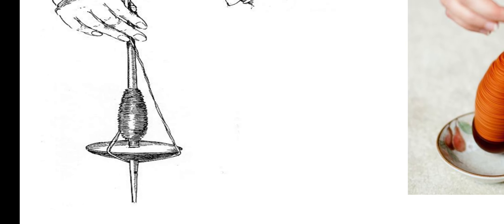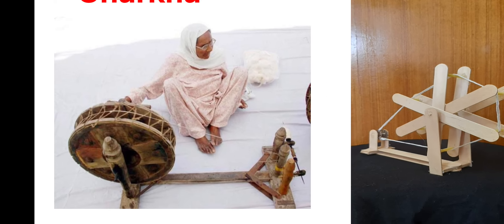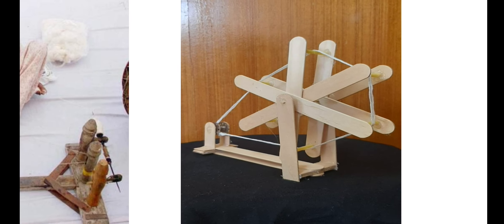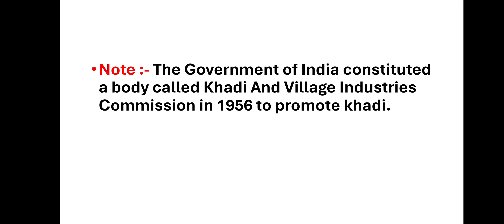Another hand-operated device used for spinning is चर्खा — इससे भी spinning होती है। The Government of India constituted a body called the Khadi and Village Industries Commission in 1956 to promote khadi — government ने यह body बनाई ताकि हम khadi को promote कर सकें।